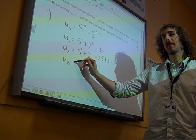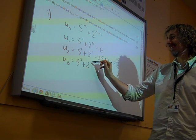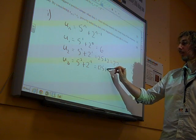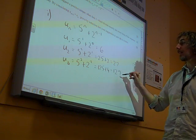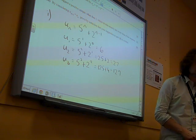So u3 would be 5 cubed plus 2 squared, so that's 125 plus 4, so 129. And lots of you wrote 6, 27, 129, and just wrote the answers and got all the marks.